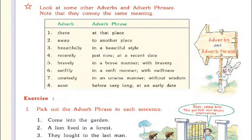Now look at some other adverbs and adverb phrases. Note that they convey the same meaning. For example: 'there' — adverb phrase: 'at that place.' Second, 'away' — adverb phrase: 'to another place.' Third, 'beautifully' — adverb phrase: 'in a beautiful style.' Fourth, 'recently' — adverb phrase: 'just now' or 'at a recent date.' Fifth, 'bravely' — adverb phrase: 'in a brave manner' or 'with bravery.' Sixth, 'swiftly' — adverb phrase: 'in a swift manner' or 'with swiftness.'